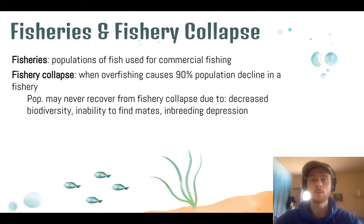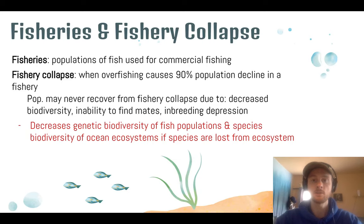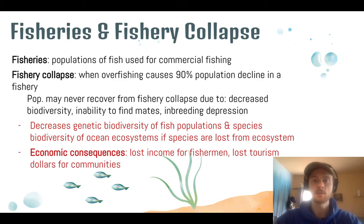Because genetic diversity is so important for resilience, these small populations are vulnerable to ecosystem disturbances — they lack genetic differences and won't have mutations that may prove helpful as adaptations. Another problem is that we may lose certain species altogether, decreasing species biodiversity in parts of the ocean, which can have big effects on the trophic pyramid. Finally, there is economic loss as well.